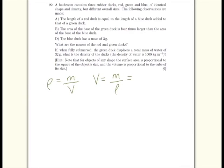So the volume of the water displaced: volume equals mass divided by density. Mass here is 32 times 10 to the minus 3 grams. We're looking at the green duck, remember, divided by 10 to the power of 3, which is the density of water. That gives us 32 times 10 to the power of minus 6 meters cubed.